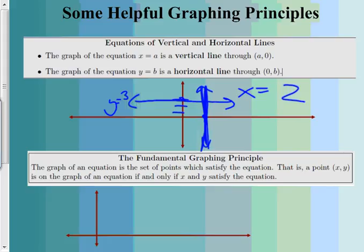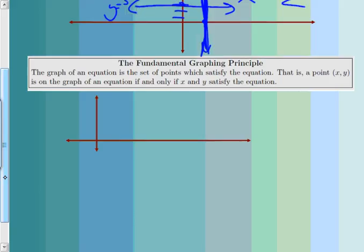This next part is basically saying that if you've graphed it correctly, the points on your graph will actually match and work in the equation. For example, if I've graphed this correctly and the point (2, 4) is on my parabola, that 2 and that 4 have to go in for x and y and make the equation true. That's all the fundamental graphing principle is saying — your points have to work in the equation.